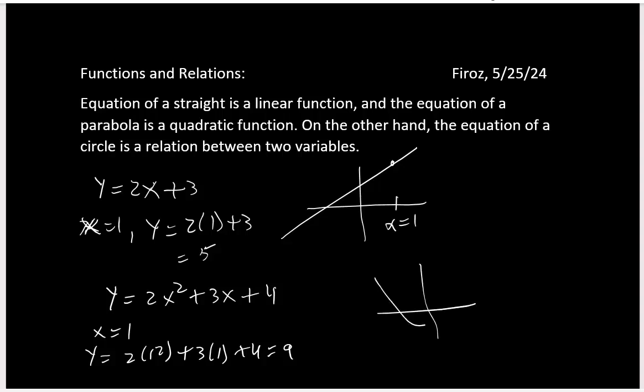And the parabola will look like this. And when I'm saying x equals 1, for example here, you get a point. This is 9. So the point is 1 comma 9. In this case, for the straight line, it will be 1 comma 5. These are all examples of functions also.